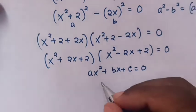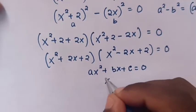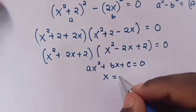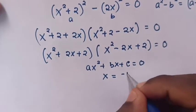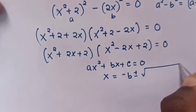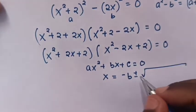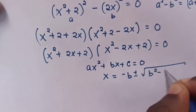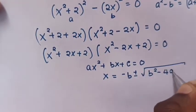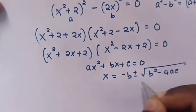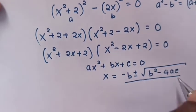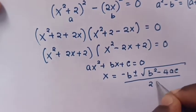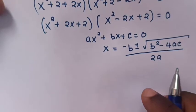To find x from a quadratic equation, x equals negative B plus or minus the square root of B² minus 4ac, all over 2a.